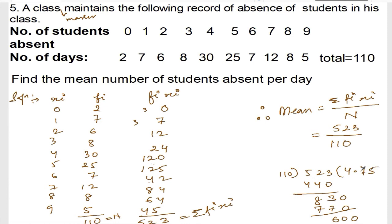Bringing down another zero, 600 divided by 110. 110 times 5 is 550. So I get 4.75.